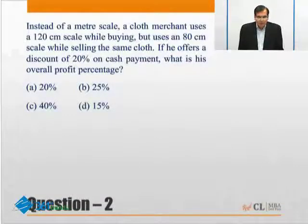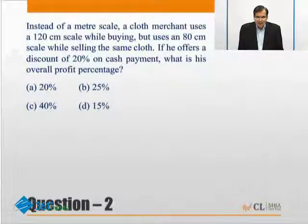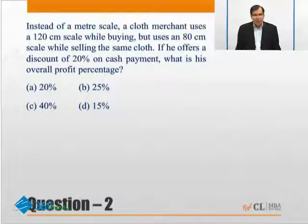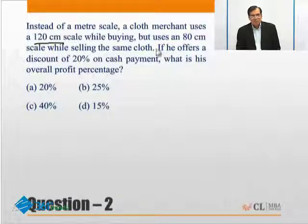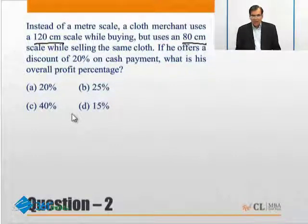We have another dishonest shopkeeper. He is using an incorrect meter scale, and he is more dishonest than the previous one because he works on both sides. So while buying as well as while selling, he makes some money. When he is buying, he uses a 120 centimeter scale — so instead of one meter, he is getting 120 centimeters, or 20 percent extra. And when he is selling, he is using an 80 centimeter scale.